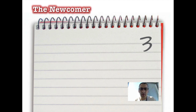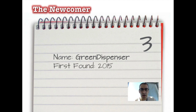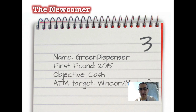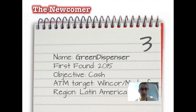Number three is very similar; it's called Green Dispenser, first found in 2015. It's similar to Plotus but has slight differences — the code base is completely different and it's coded in a very different language, so it's clearly a different thing. It targets one specific brand, different than the previous one. It might be the same group branching out their development. Again, Latin America.